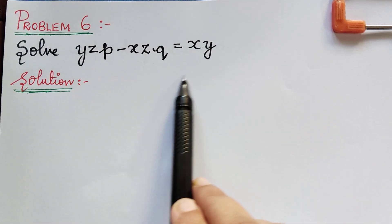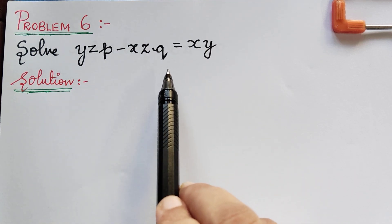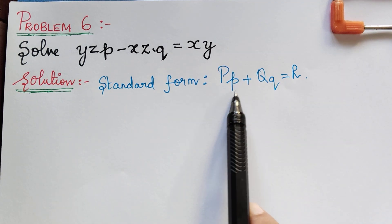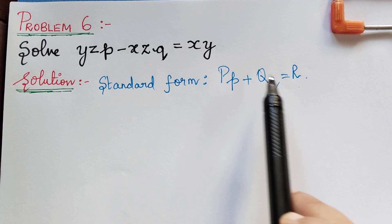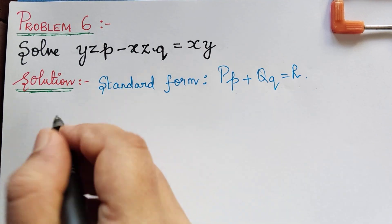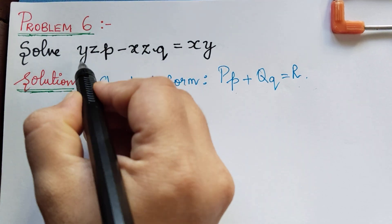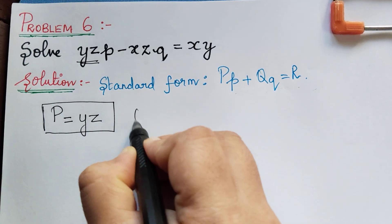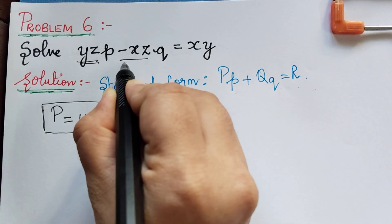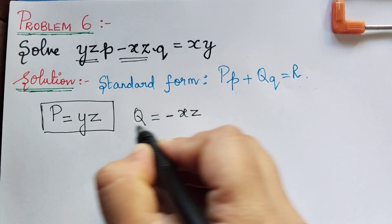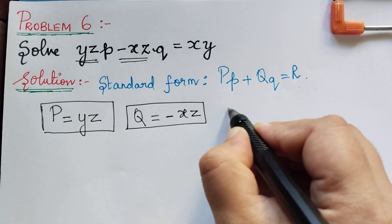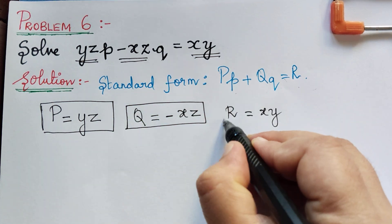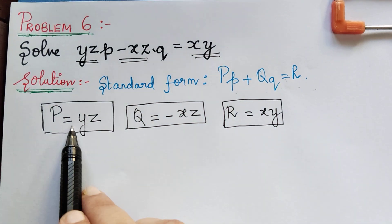Since this is of the Lagrange's form, let us compare this with the standard equation. The standard equation of the Lagrange's form is given by capital P times small p plus capital Q times small q is equal to capital R. While comparing with the given equation, we observe that capital P is equal to yz, capital Q is equal to negative xz, and capital R is equal to xy.